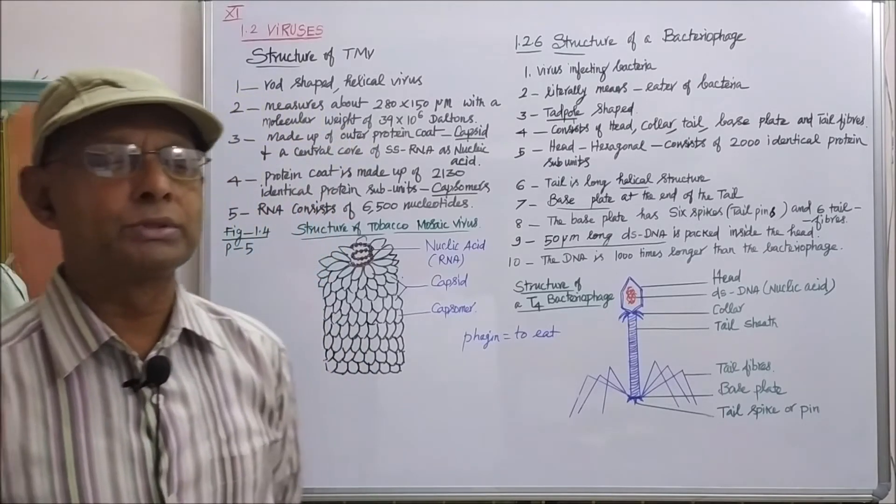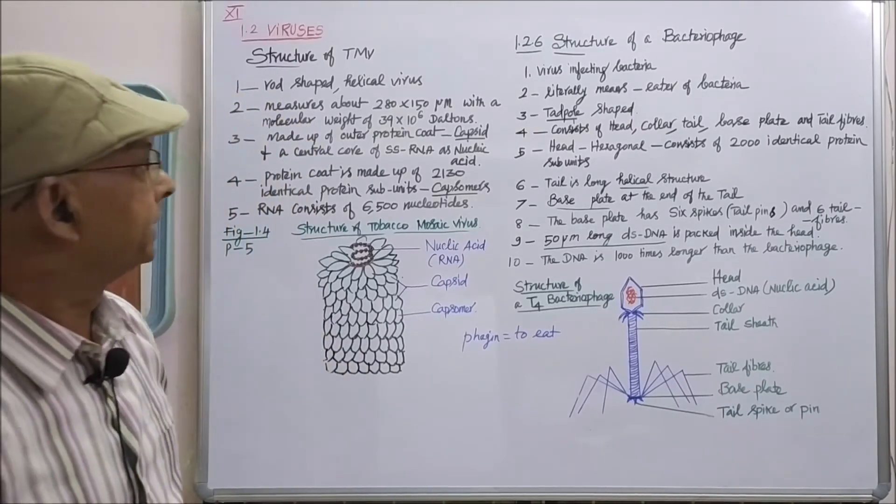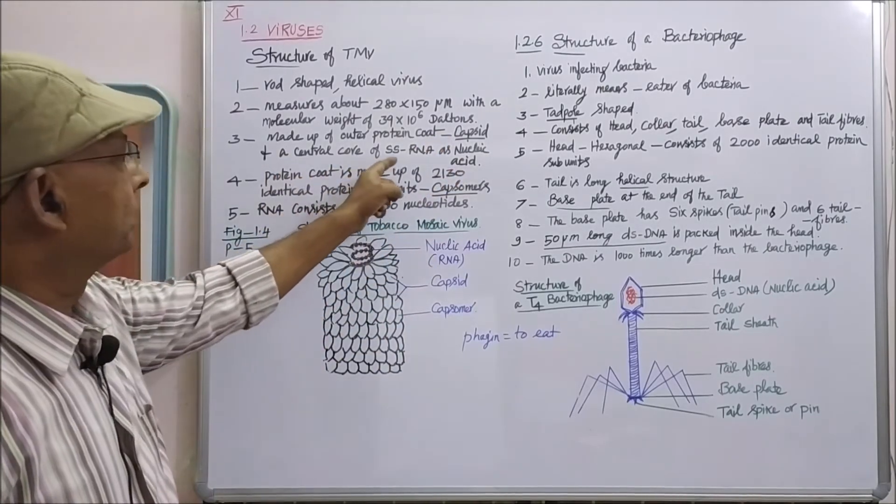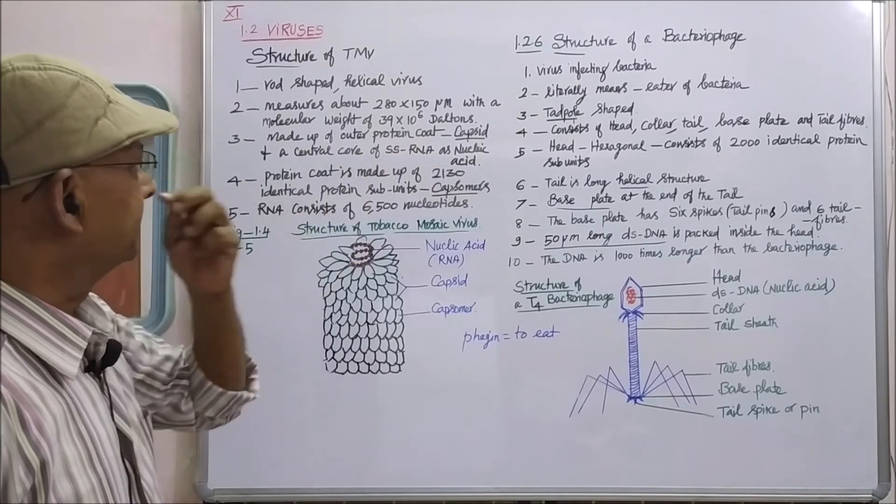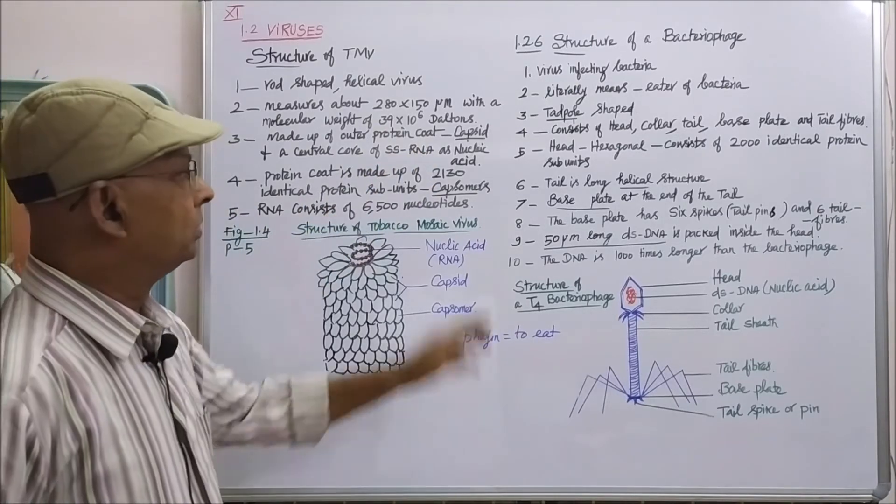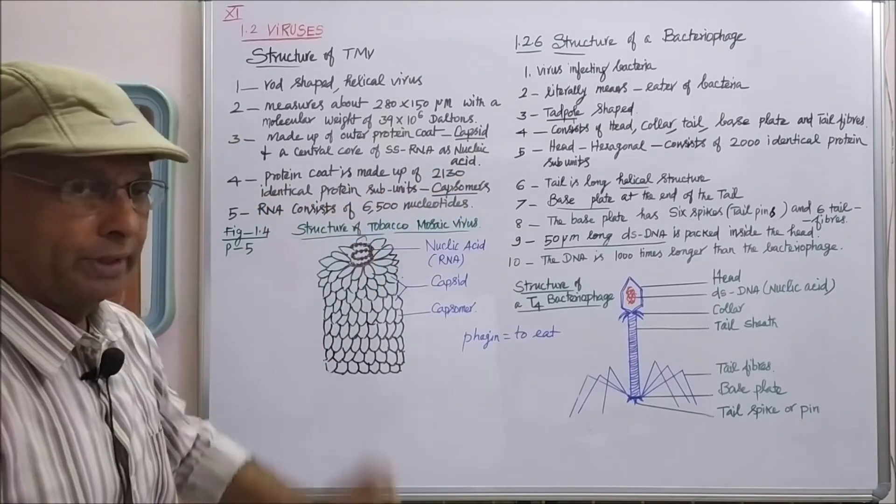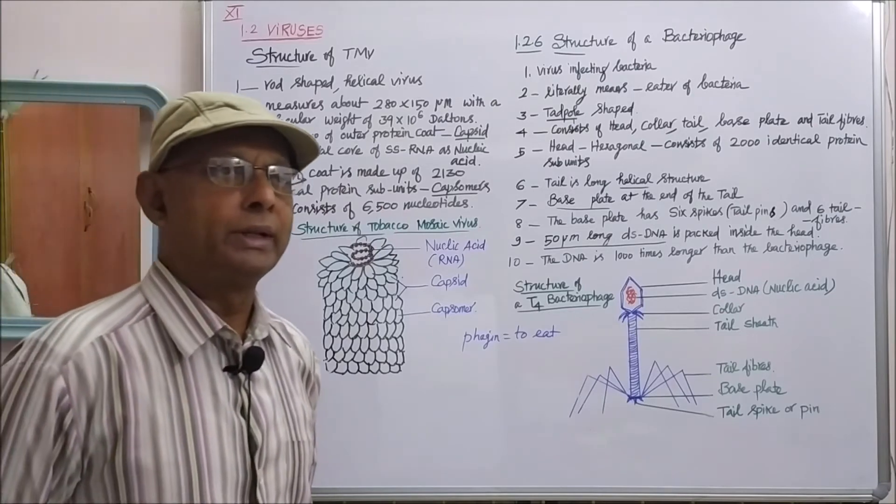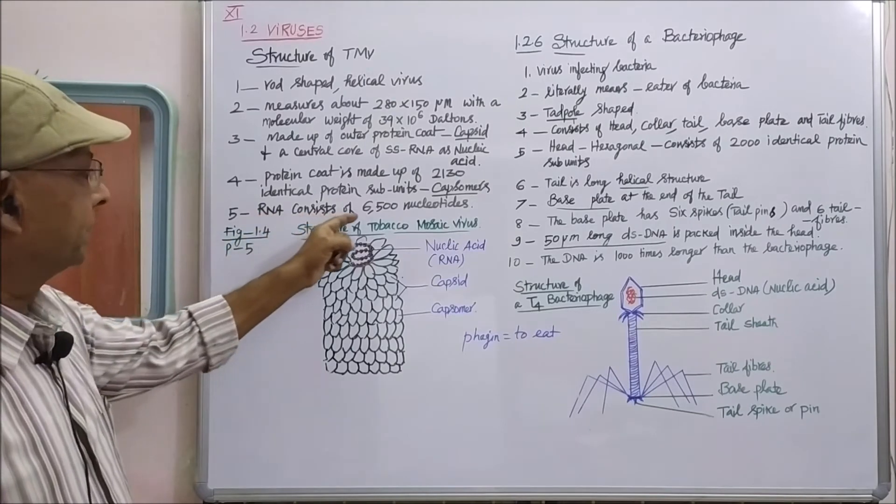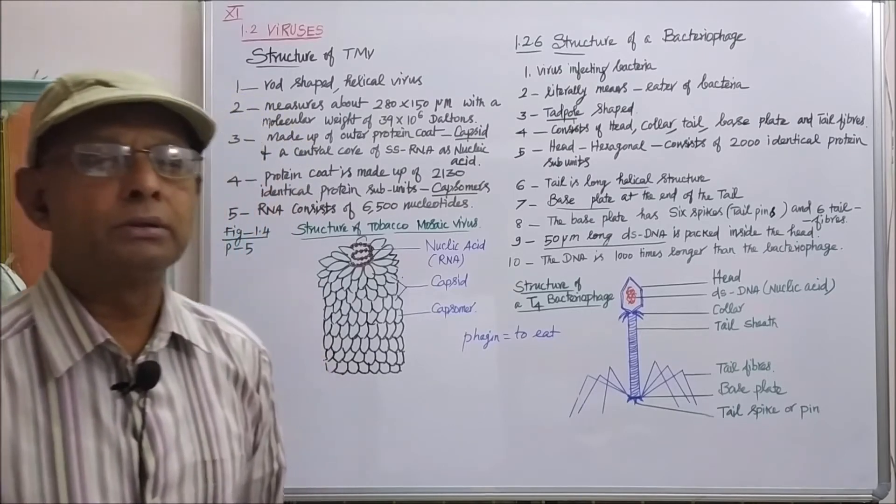Each tobacco mosaic virus consists of an outer protein coat, technically called capsid, and a central core of single-stranded RNA as nucleic acid. The protein coat is made up of 2130 identical protein subunits, each called capsomere. The RNA consists of 6500 nucleotides.